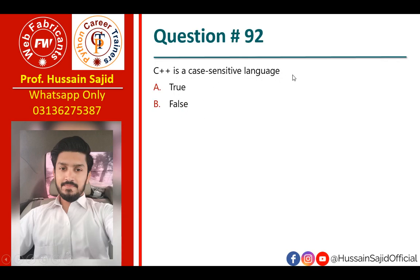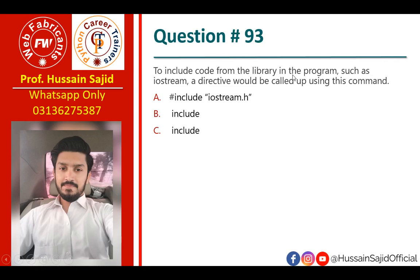C++ is a case-sensitive language. To include code from a library in the program, we use the `#include` preprocessor directive — for example, `#include <iostream>` or `#include "iostream.h"` with the filename inside angle brackets or double quotes.